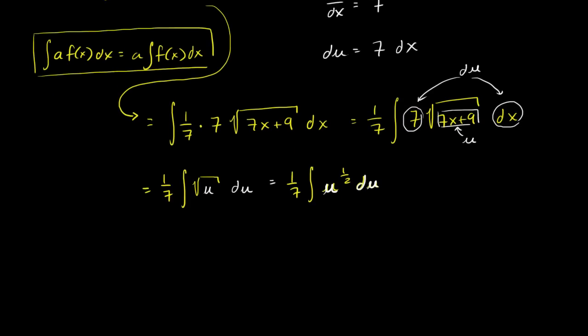So what is the antiderivative of u to the 1 half power? Well, we increment u's power by 1. So this is going to be equal to, and let me not forget this 1 seventh out front. So it's going to be 1 seventh times u to the 3 halves. 1 half plus 1 is 1 and 1 half, or 3 halves. So it's going to be u to the 3 halves. And then we're going to multiply this new thing times the reciprocal of 3 halves, which is 2 thirds. And I encourage you to verify the derivative of 2 thirds u to the 3 halves is indeed u to the 1 half.